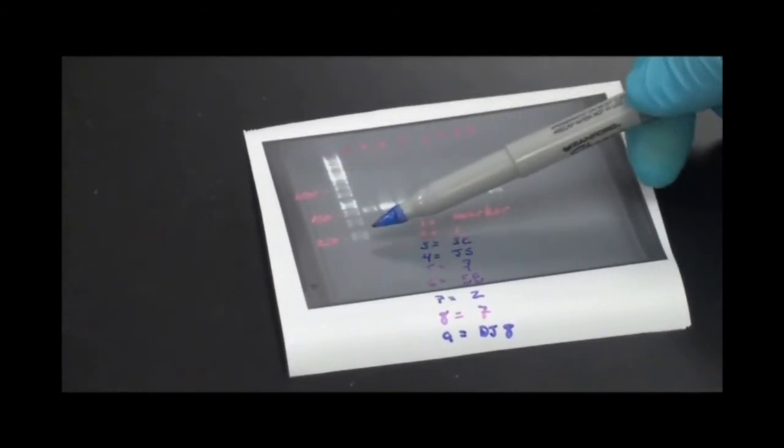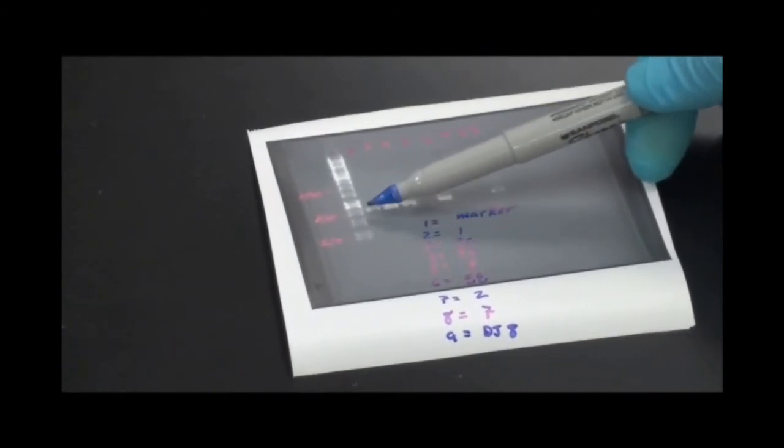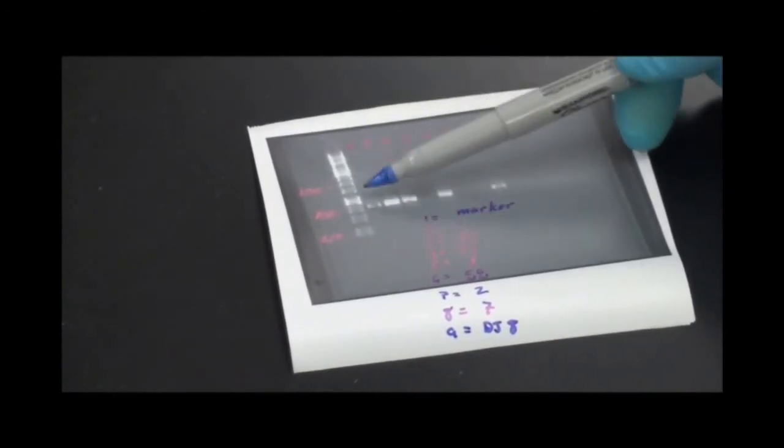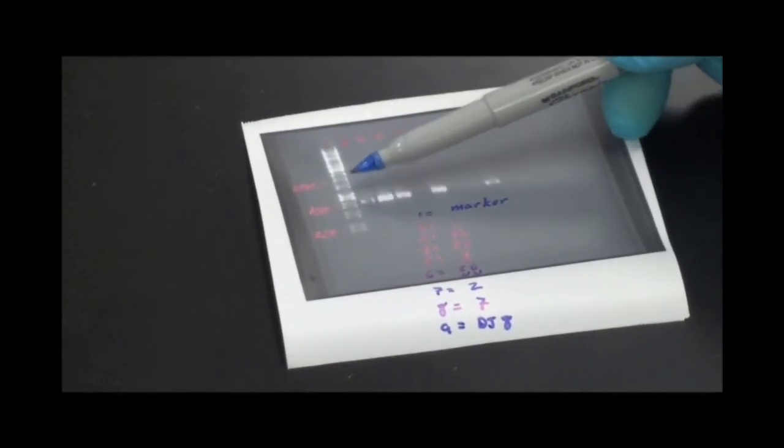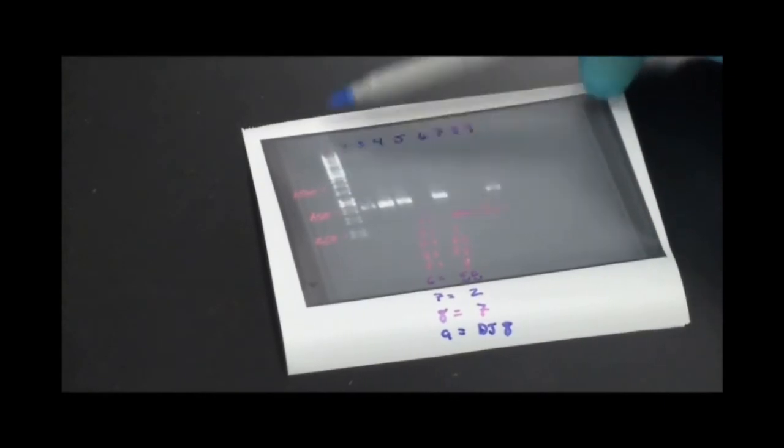And so I looked at that. And I know that this band occurs at 250 base pairs. That one's at 500. 750. 1000 is that bright band that you see. And then from there it goes 1500 and 2000 and on up.